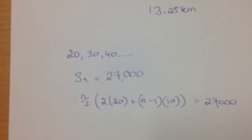Now you can just clean that up and eventually you'll get n over 2 times 10n plus 30 is equal to 27,000.